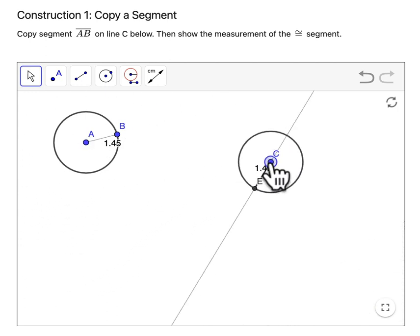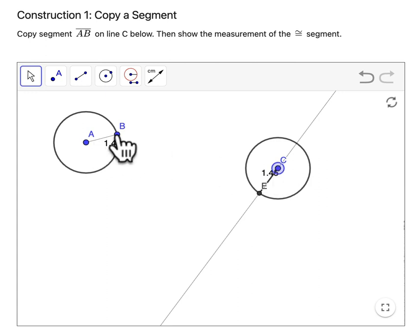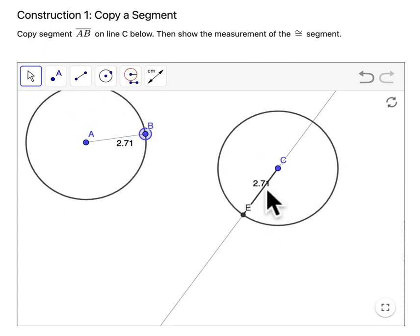For example, C could really be anywhere. It doesn't affect the congruent segments, and the direction is irrelevant as well.